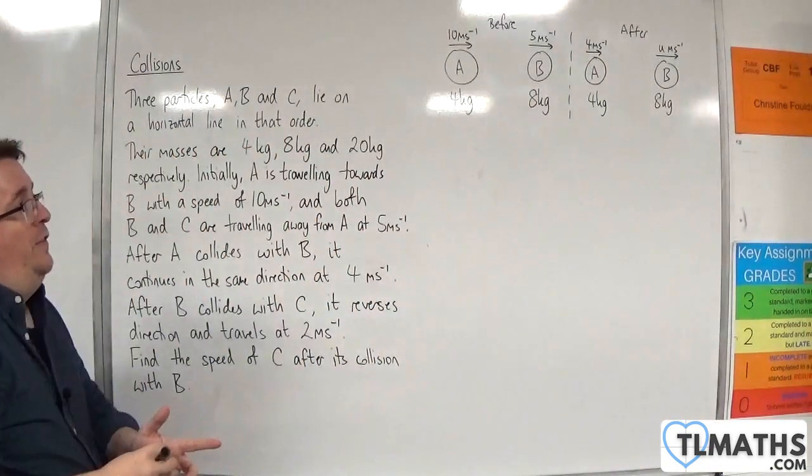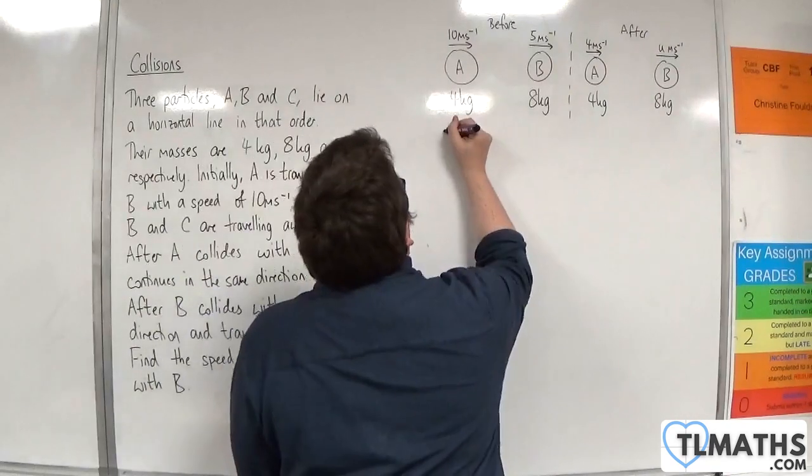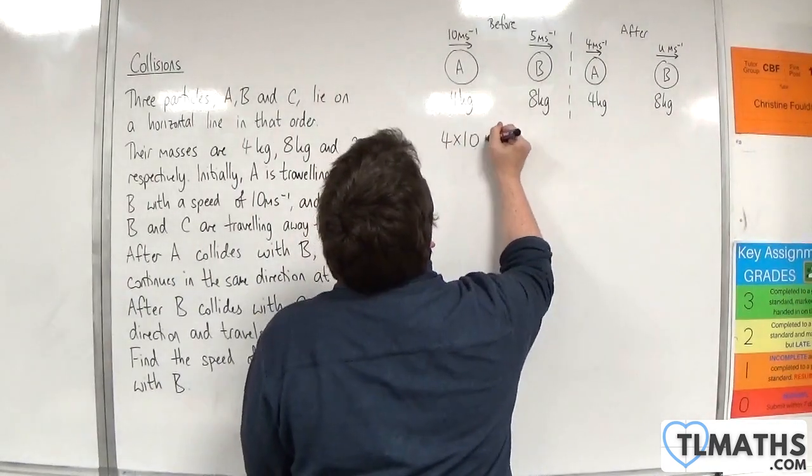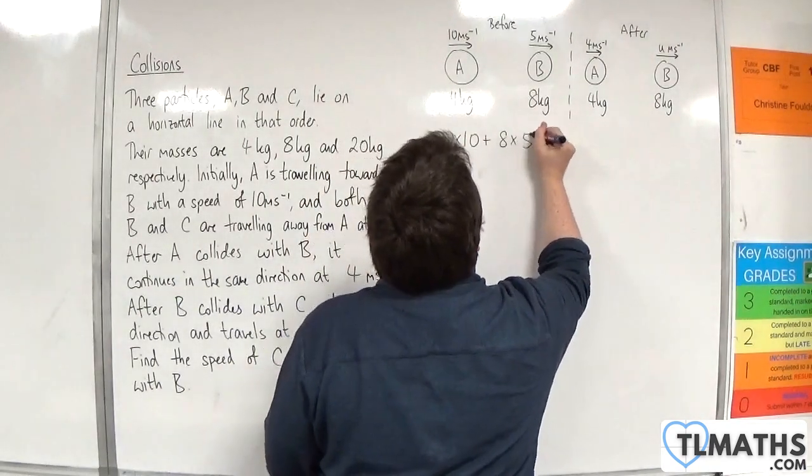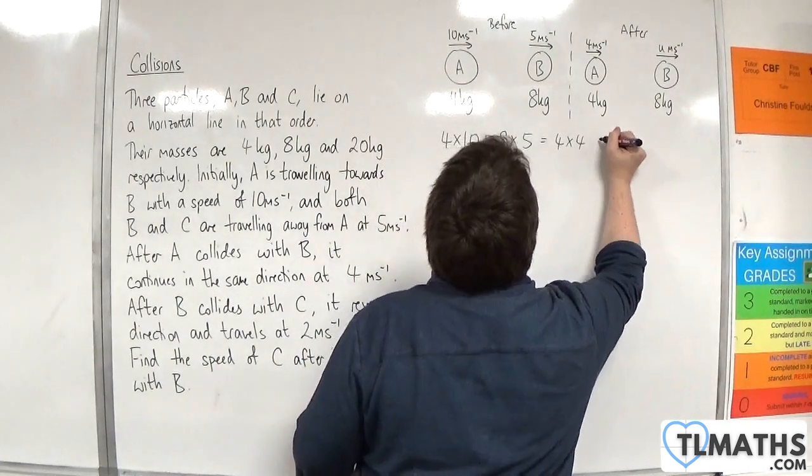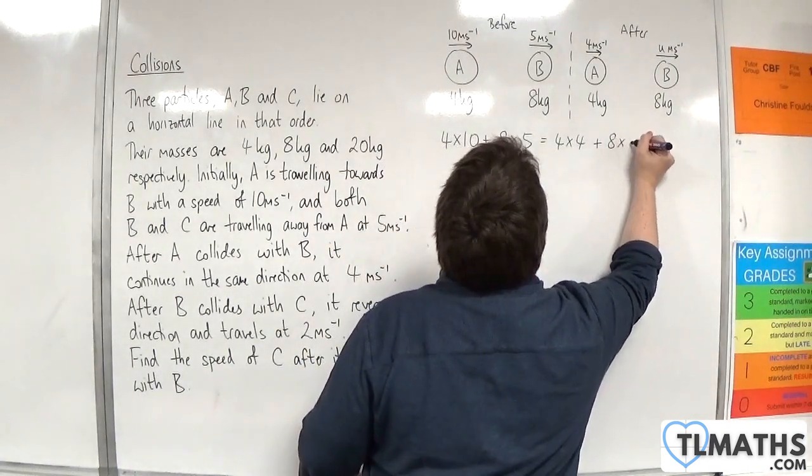So using the conservation of linear momentum, we must have that 4 times 10 plus 8 times 5 must be equal to 4 times 4 plus 8 times U.